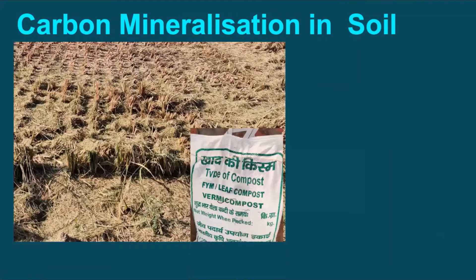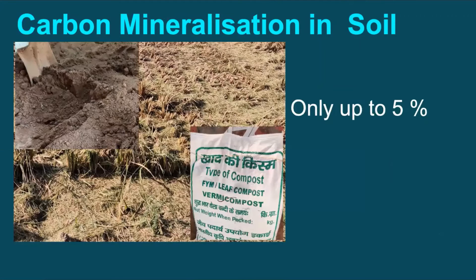Application of organic matter or compost containing amino acids helps to remineralize the soil, but with less than 5% efficiency. Hence, it is quite difficult to have a 100% efficient conversion into humic substances. Therefore, to continue with crop cultivation, we either need a huge amount of organic matter, which is not available, or we will have to find some alternative to meet the demand on a regular basis.